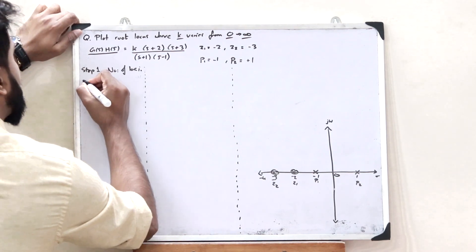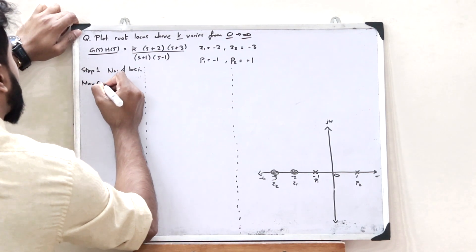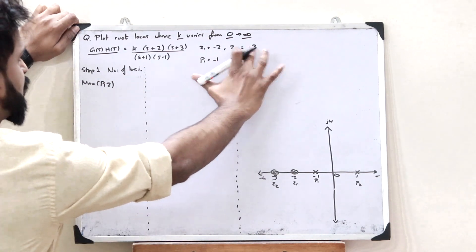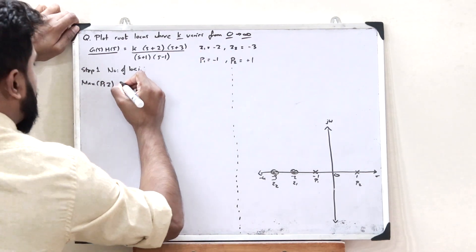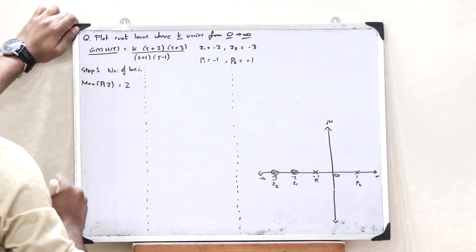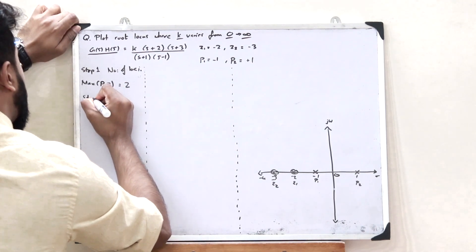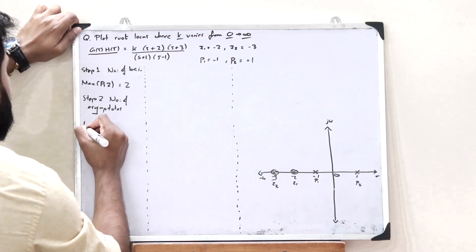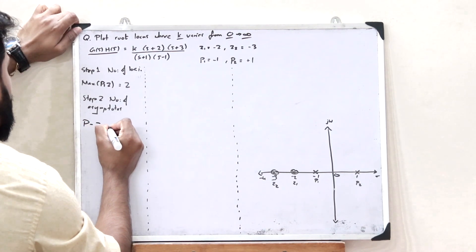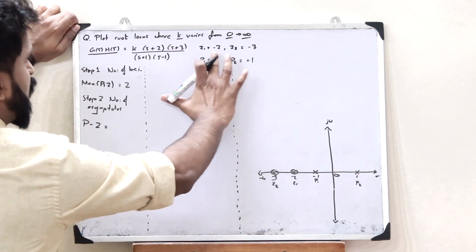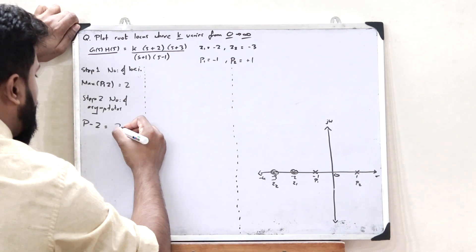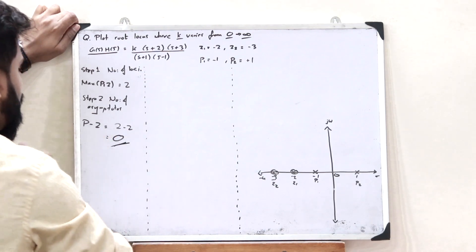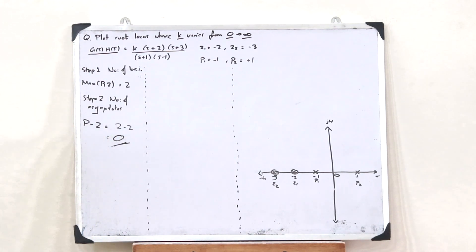Step 1: identify the number of loci, which is the maximum of the number of poles and the number of zeros. Here the number of poles is 2 and the number of zeros is 2, so the number of loci equals 2. Step 2: the number of asymptotes = number of poles − number of zeros = 2 − 2 = 0, so there are no asymptotes present.